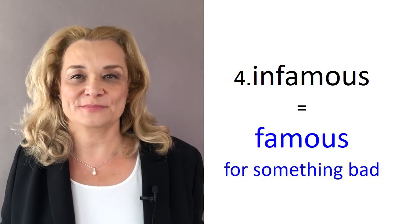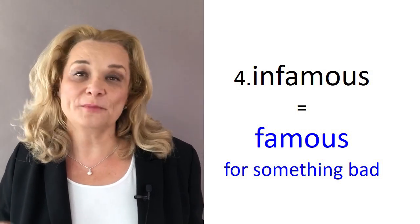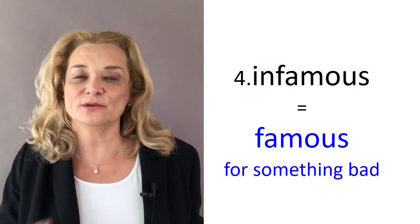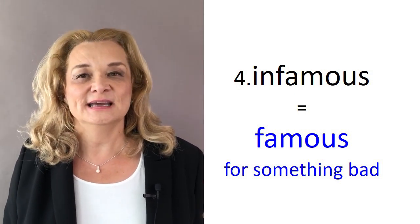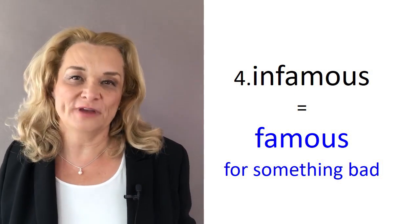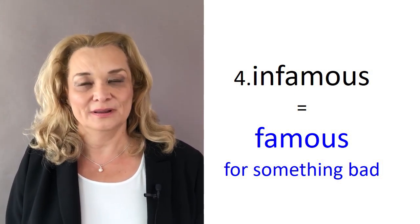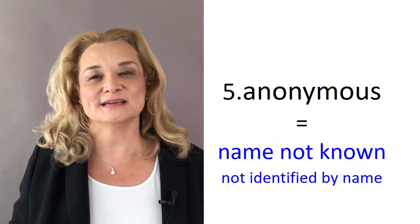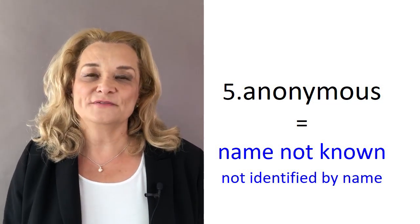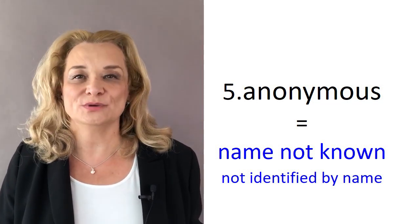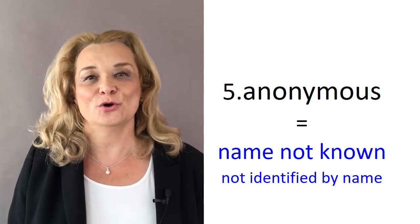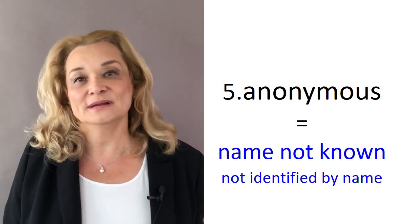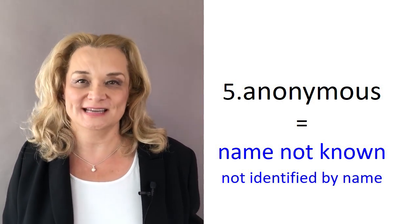Number four: infamous. Be careful about that word — it's not infamous. We have the word famous, but this one we stress the first syllable: infamous. Infamous is when you're famous for something very bad. A criminal can be infamous. Number five: anonymous. We stress the second syllable: anonymous. If someone is anonymous, they don't want to give their real name — they don't want you to know who they are. Sometimes you will receive an anonymous letter or an anonymous comment. We don't know who the person is.